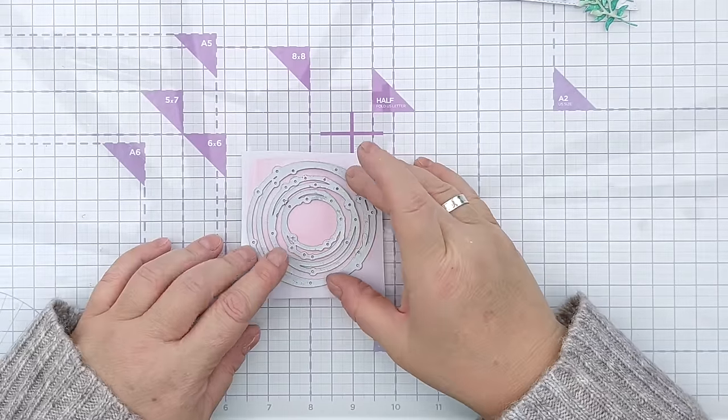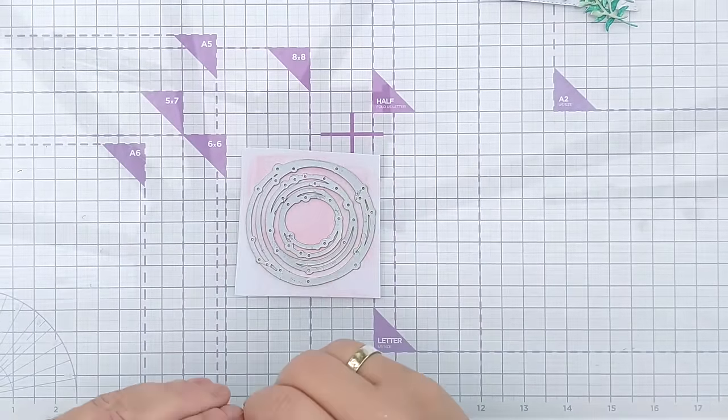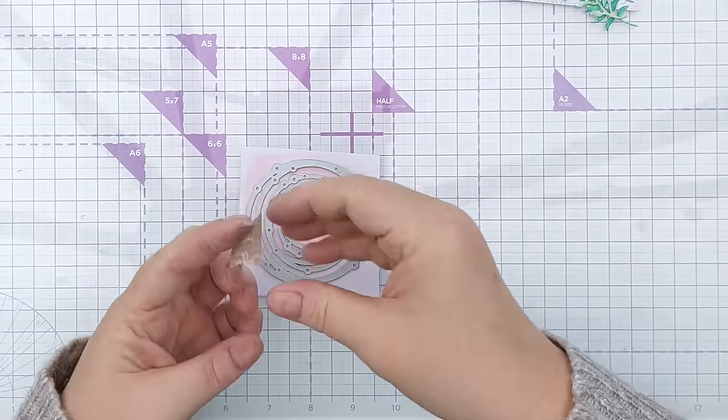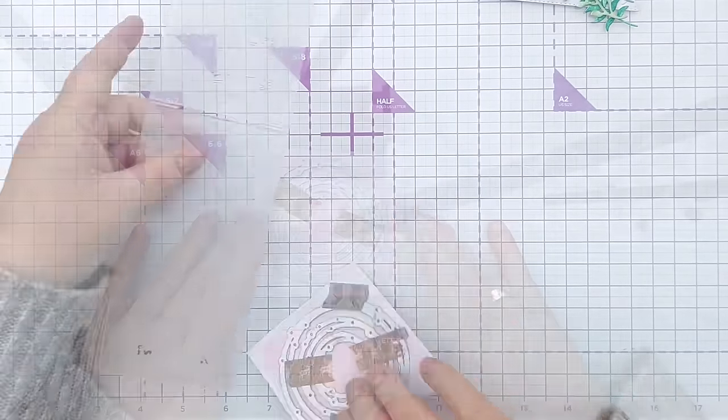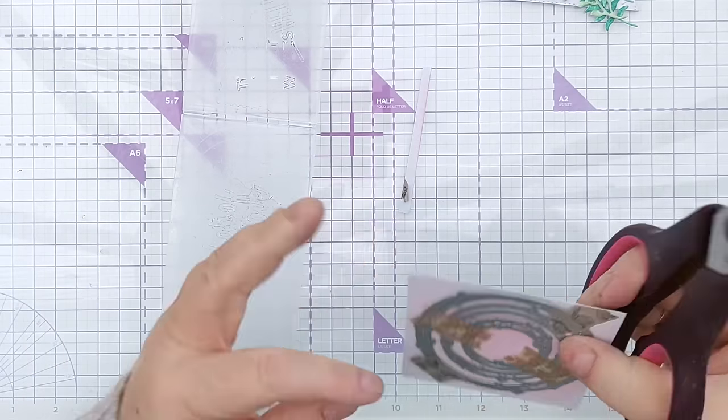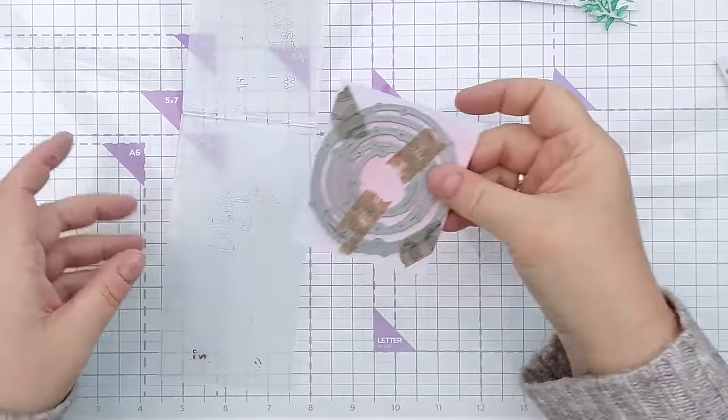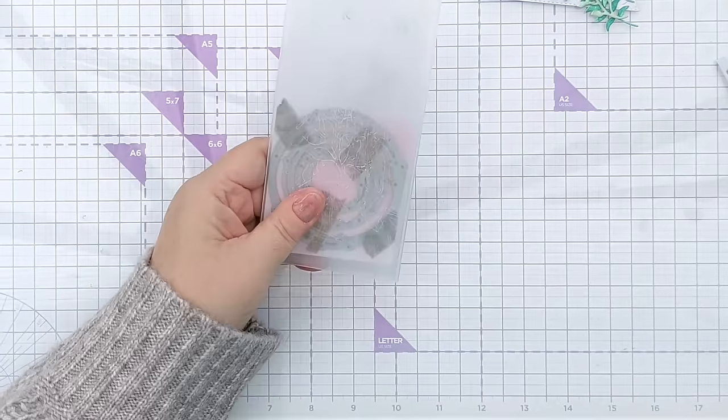I then washi taped my dies to that square of pinky paper and ran that through my Gemini mini again. I did that a couple of times because not everything cut brilliantly first time but we got there in the end.